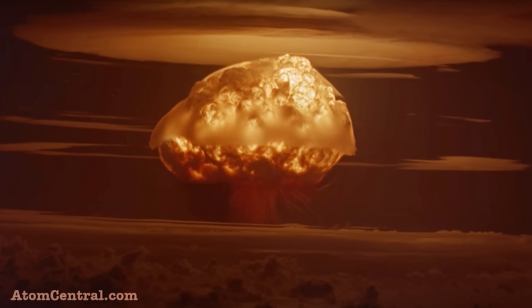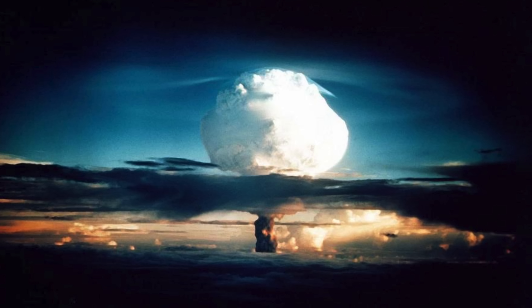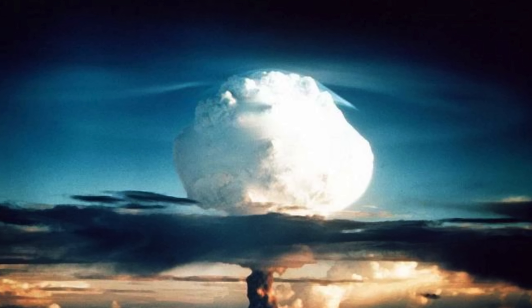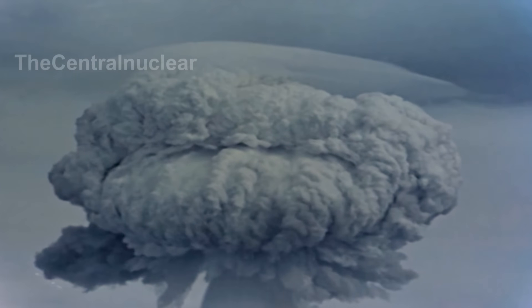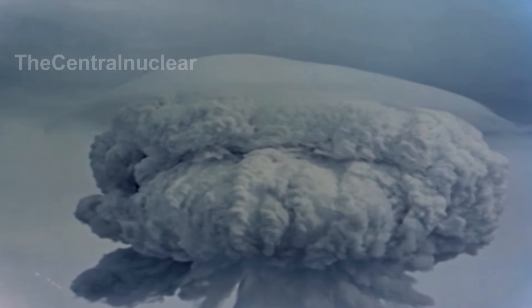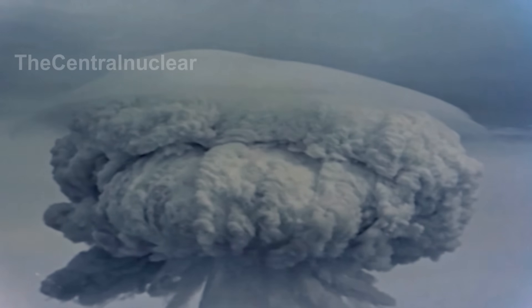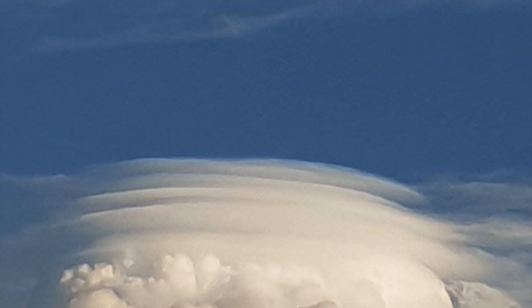Going back to the Castle Bravo test, this higher-altitude footage showcases another strange phenomenon: ice caps. These look like condensation clouds, but they're actually ice crystals that wrap around the mushroom cloud's vortex ring. This is occurring way up in the upper atmosphere, so ice crystals next to a mushroom cloud are possible. These are also referred to as pileus clouds or scarf clouds, and they can often be seen above high-altitude cumulonimbus clouds.